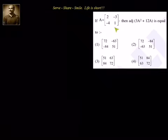Now we have been given matrix A, so we can find out 3A² separately, 12A separately. We can add both of them. Since it is a 2 by 2 matrix, it is very easy. We can find out the adjoint of that particular matrix. So let us start.